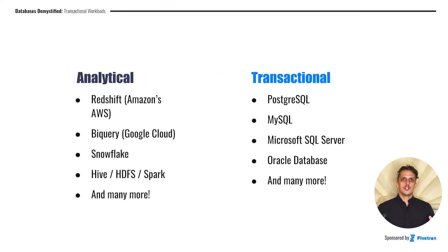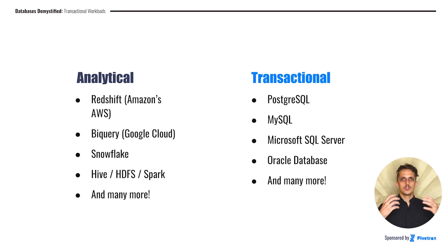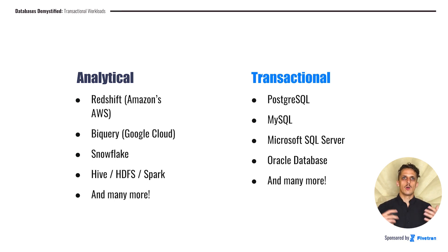Here are a few technologies that you might be familiar with, or that you might have heard of, that fit into these different paradigms. On the analytical side, we have data warehousing tools like Redshift, BigQuery, and Snowflake, as well as the MapReduce family of tools like Hive, HDFS, and Spark. On the transactional side, some very common tools are PostgreSQL and MySQL — they're both open source. And on the proprietary side, we have Microsoft SQL Server and Oracle Database.